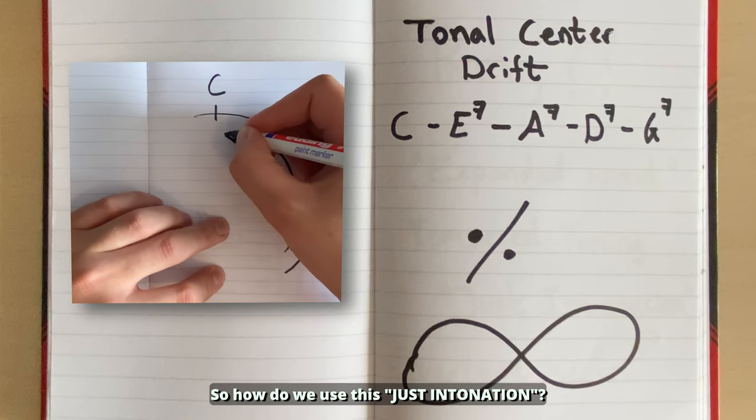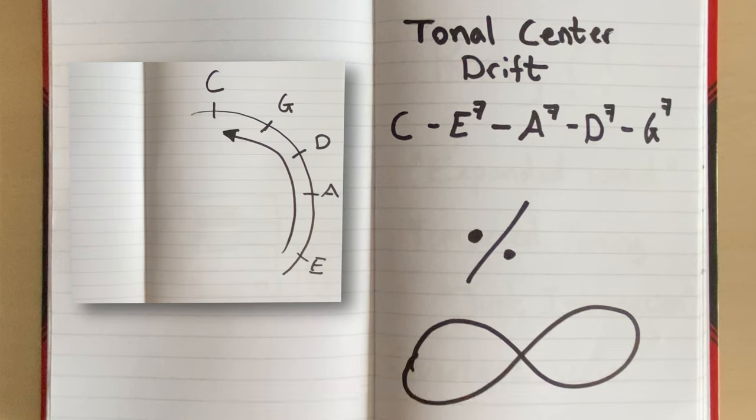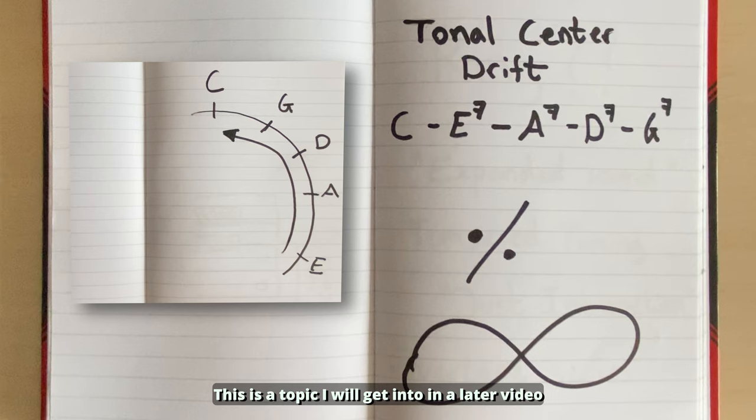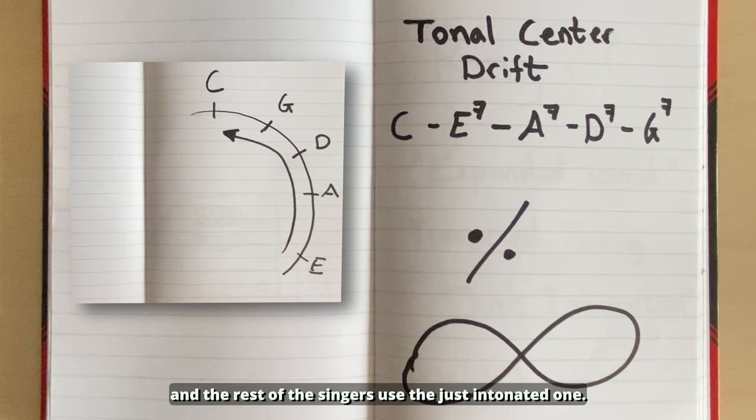So how do we use this just intonation? This is a topic I will get into in a later video, but the short answer could be that the lead should try to follow the equal tempered tuning and the rest of the singers use the just intonated one.